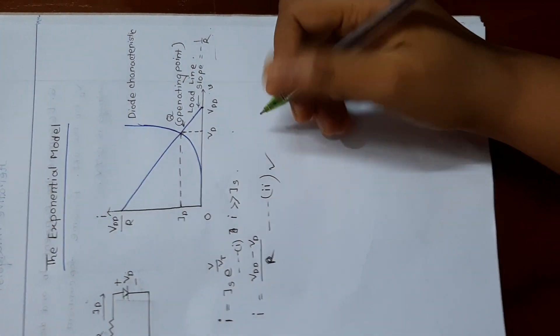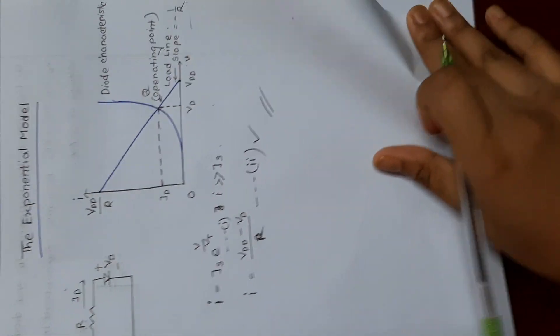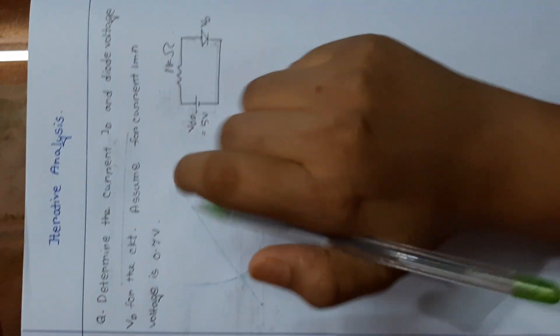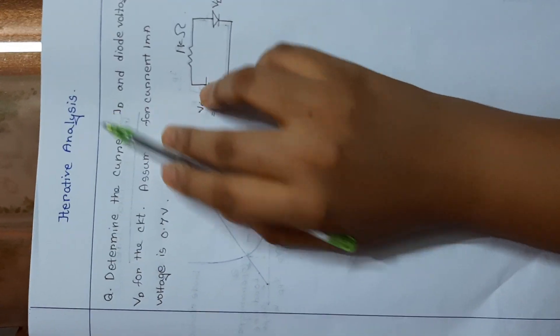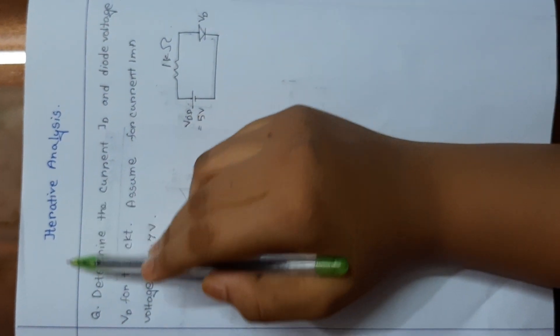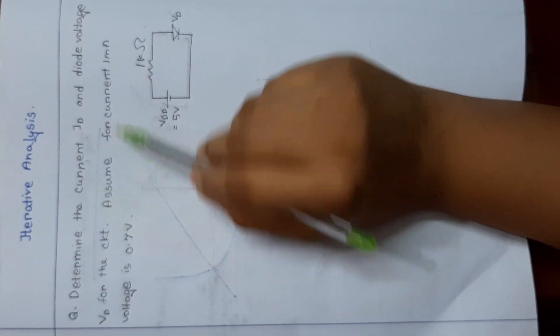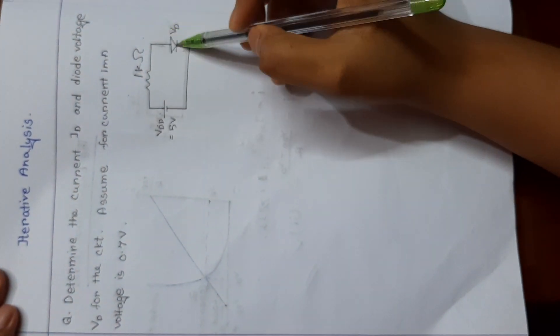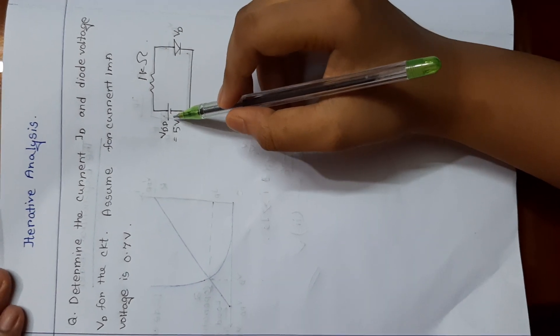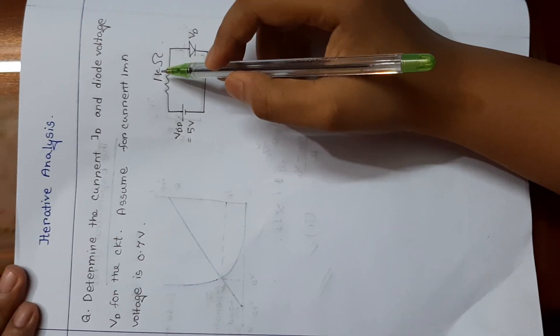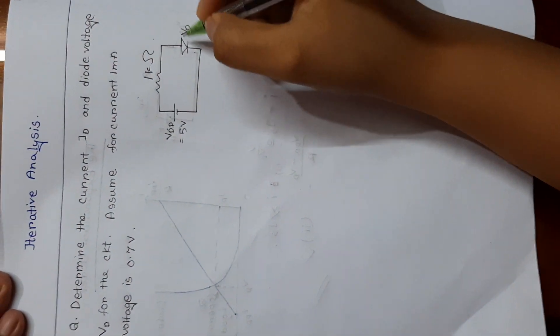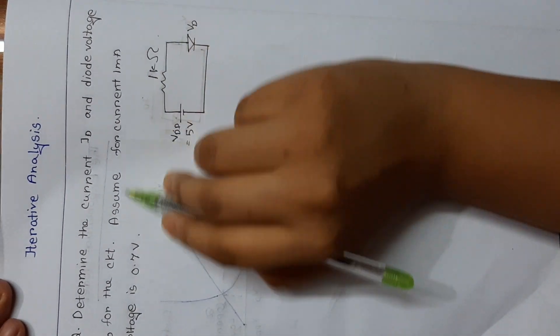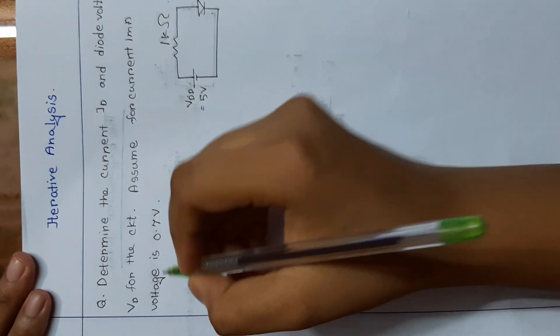And the next part I will explain, we can solve math problems by using iterative model, by using iterative analysis. So here is a math for this. If the circuit is like this, the battery voltage is 5 volt, and we have a 1 kilo ohm resistance, and this is the diode.